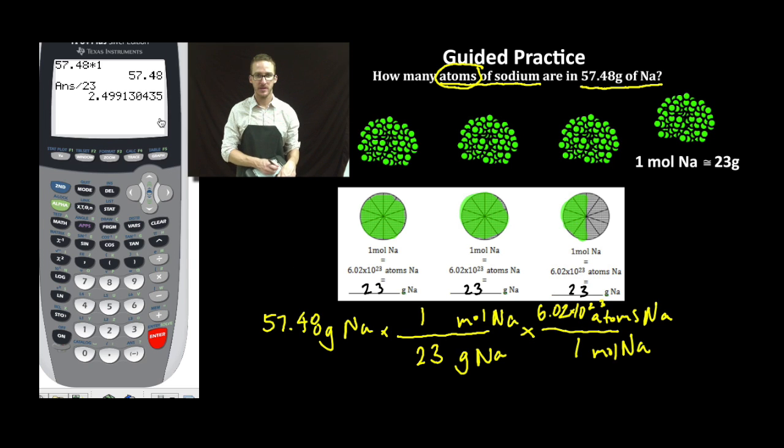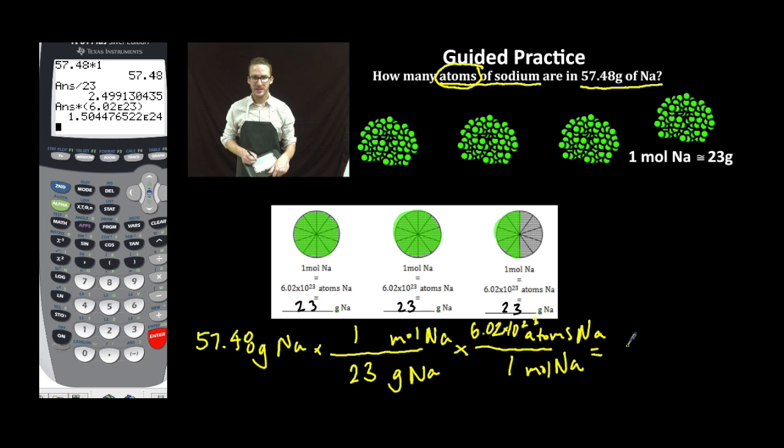Back to the calculator. My number of moles I'm going to multiply by Avogadro's number. It's going to be 1.504 times 10 to the 24 atoms of sodium.